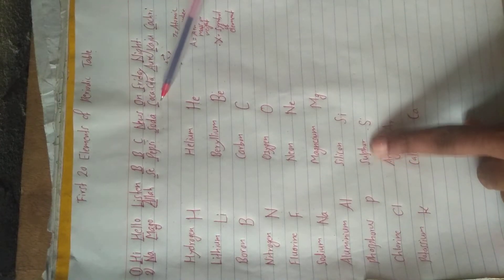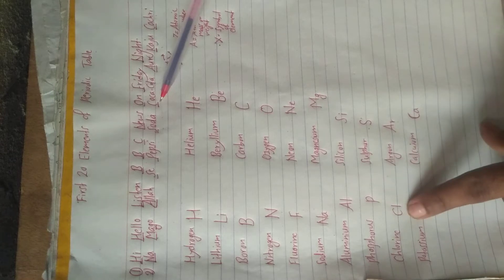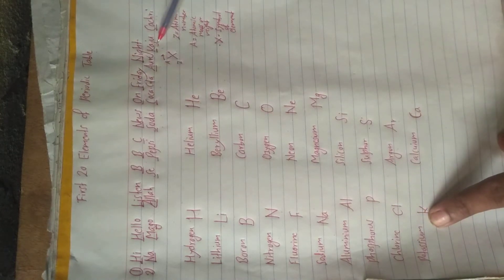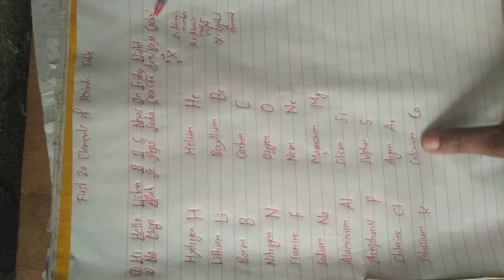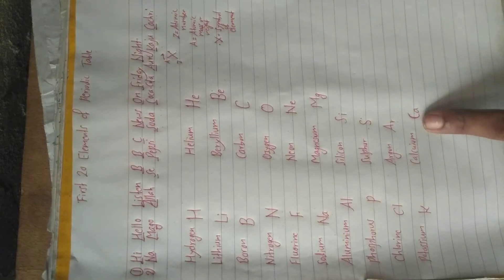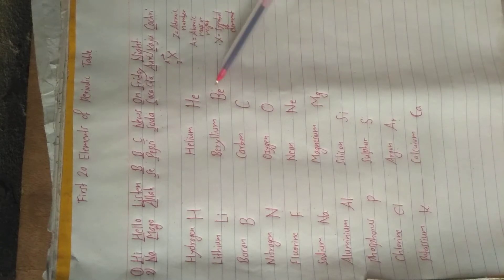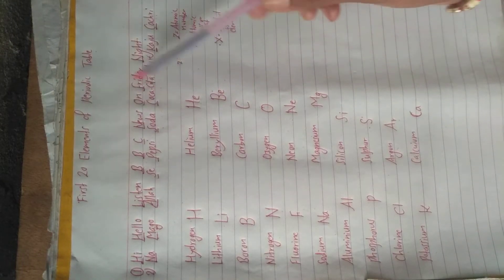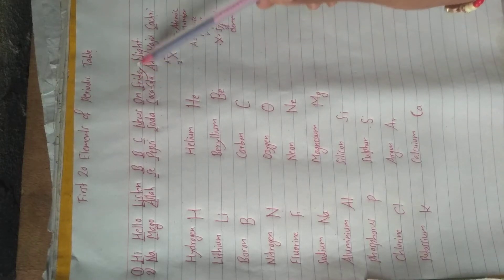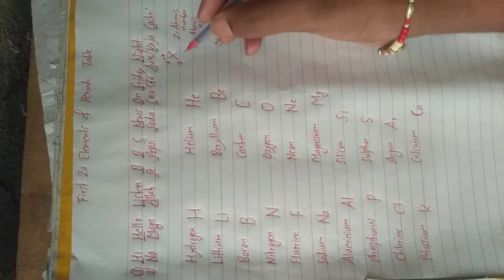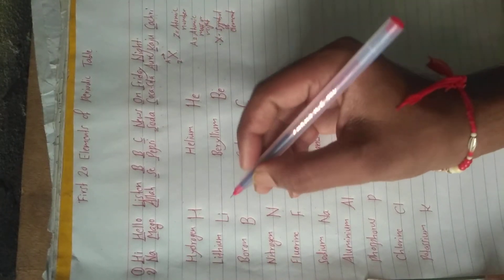Continuing: Cl chlorine, Ar argon, K potassium (kaju), and Ca calcium. So this is the trick to recall all the first 20 elements with just these two statements. Now next we will learn the atomic numbers. Atomic number is very easy — we just have to write it serially.